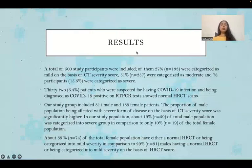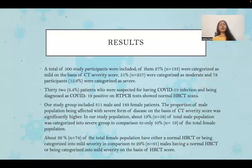A total of 500 study participants were included. 27% — that is, 133 patients — were categorized as mild on the basis of CT severity score. 51%, which is 257 patients, were categorized as moderate, and 78 participants were categorized as severe. 32 patients (6.4%) who were suspected for COVID-19 and diagnosed as COVID-19 positive on RT-PCR tests showed normal HRCT scans.